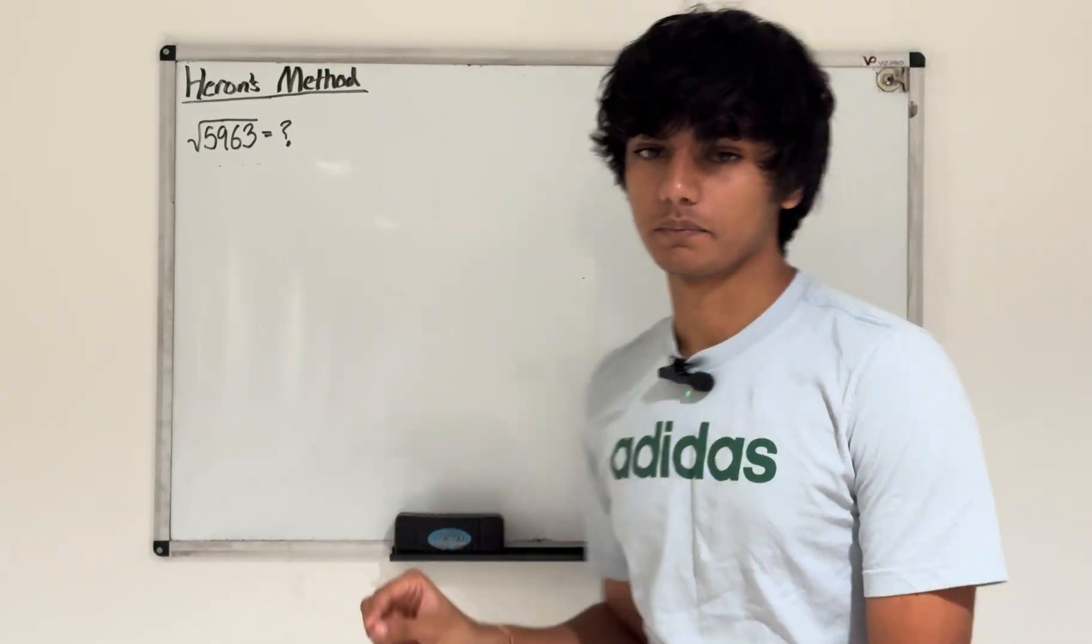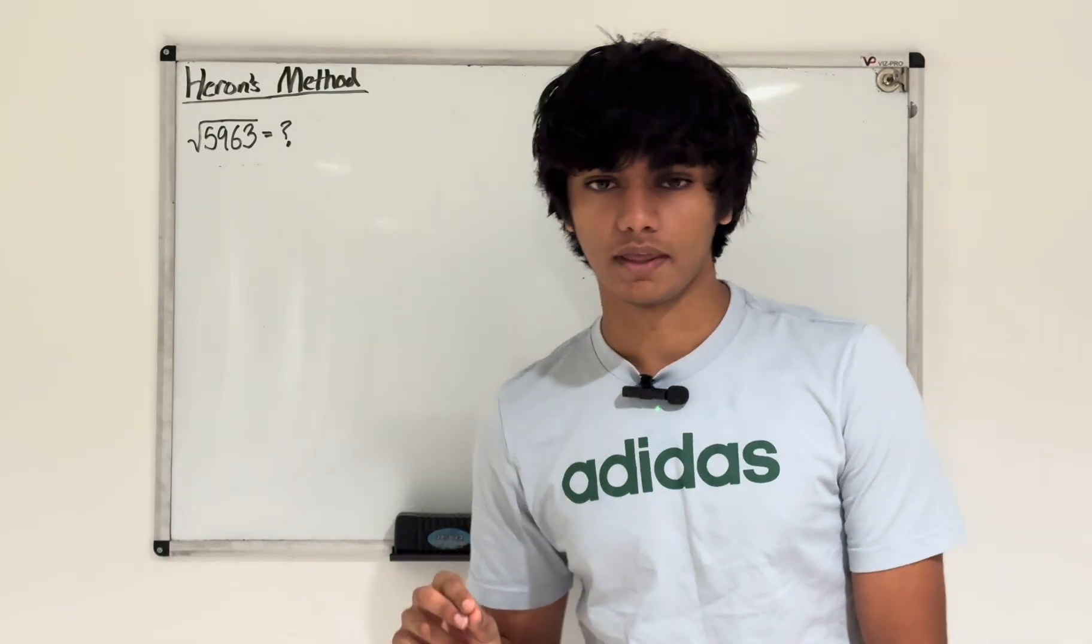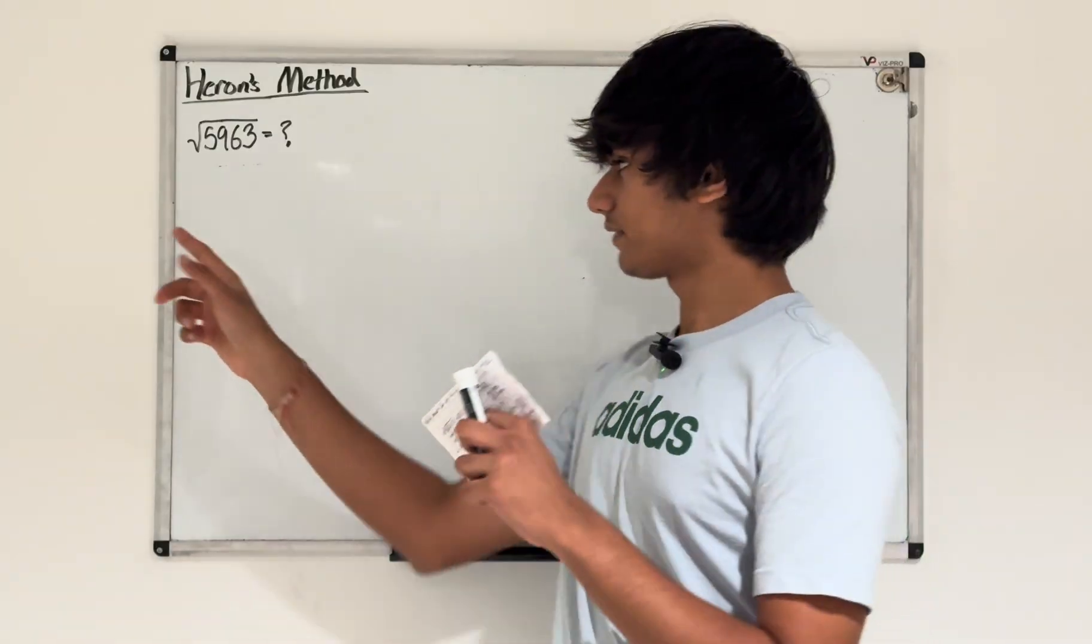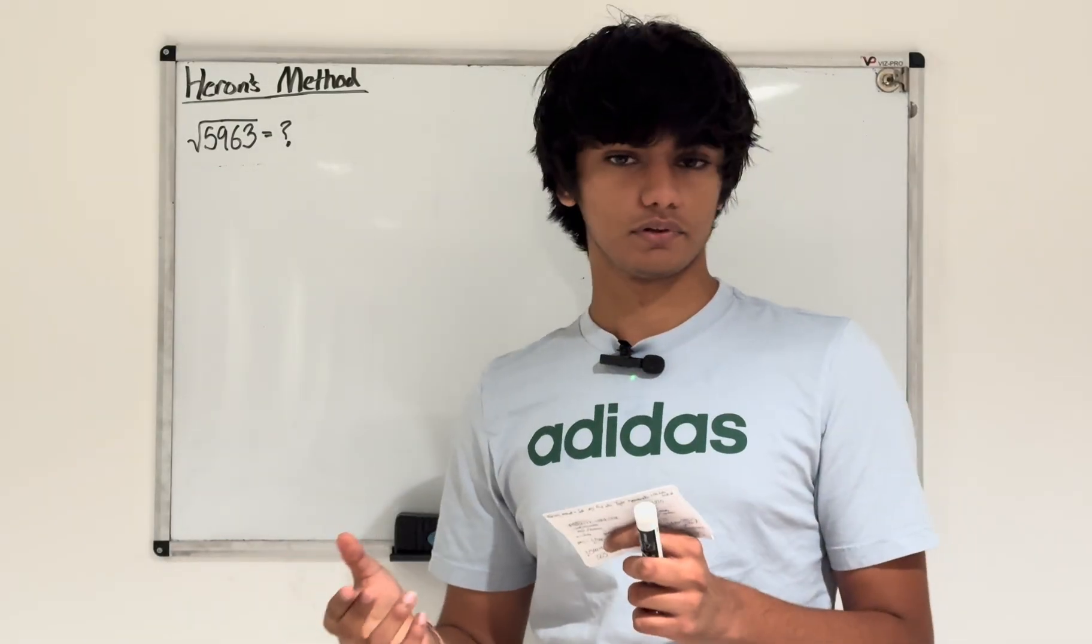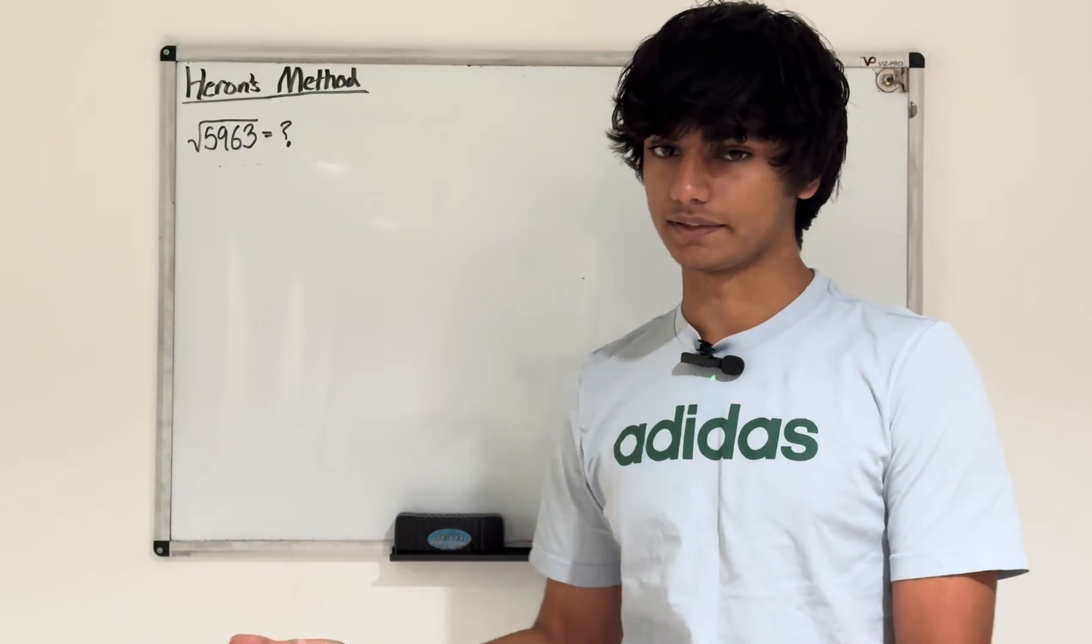Heron's method was developed over 2,000 years ago by a mathematician named Heron in ancient Babylon. Basically what Heron's method does is it breaks down the square root into simple division and multiplication operations to make it easy to compute in your head or very quickly.